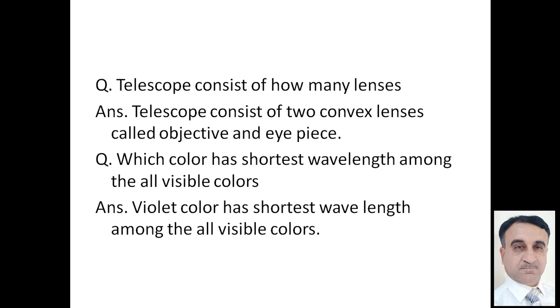Telescope consists of how many lenses? Telescope consists of two lenses. One is called objective, which is towards the object. The other is called eyepiece, which is near our eye.